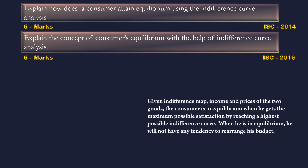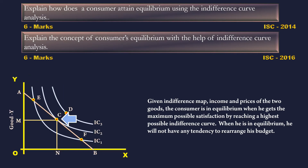Answer: Given the Indifference Map, income and prices of the two goods, the consumer is in equilibrium when he gets the maximum possible satisfaction by reaching the highest possible Indifference Curve. When he is in equilibrium, he will not have any tendency to rearrange his budget.